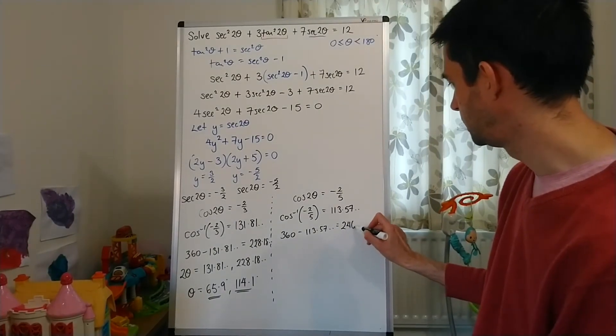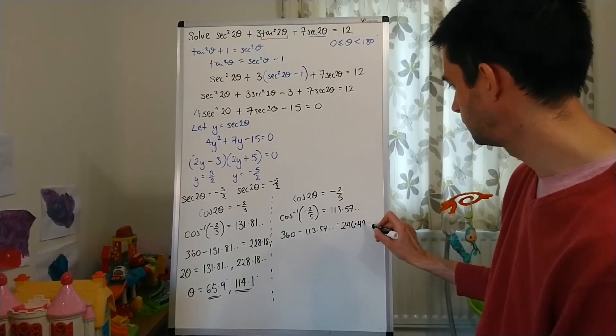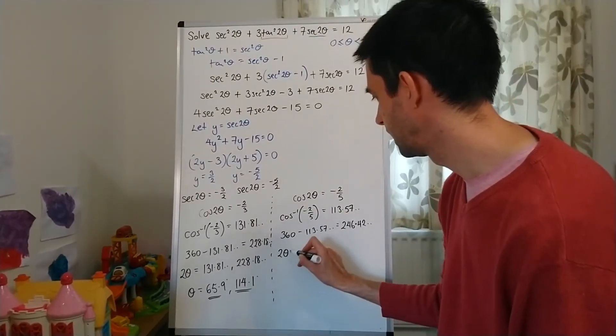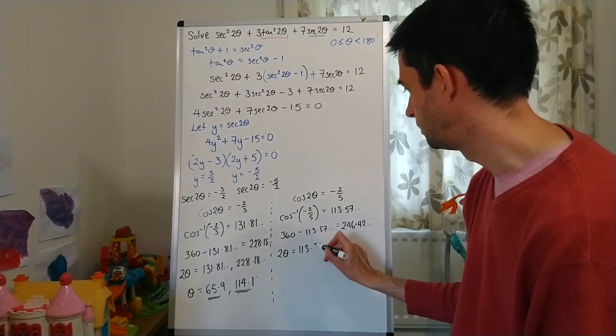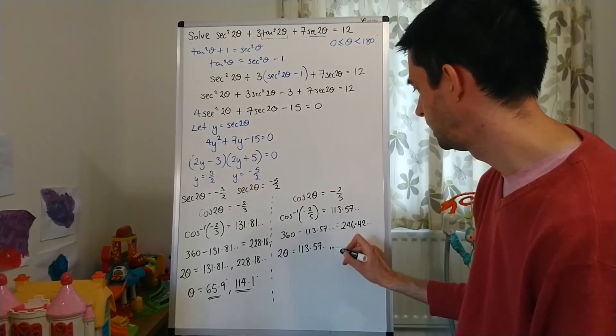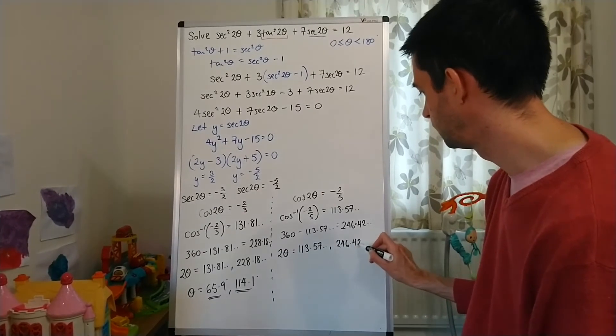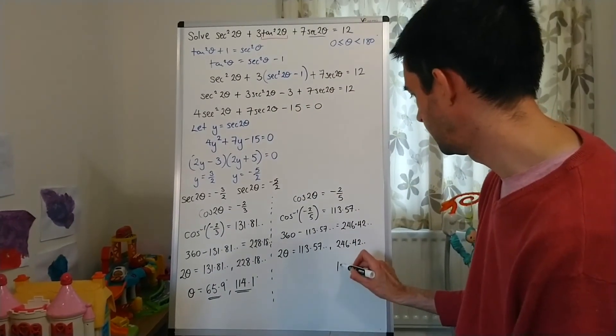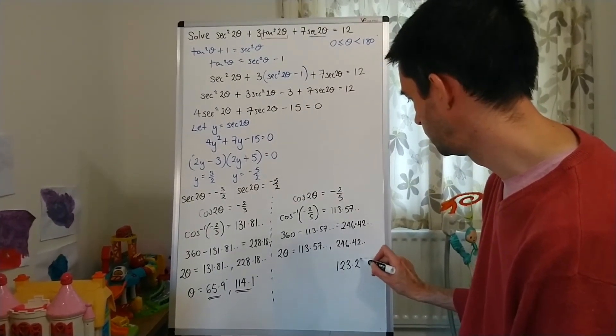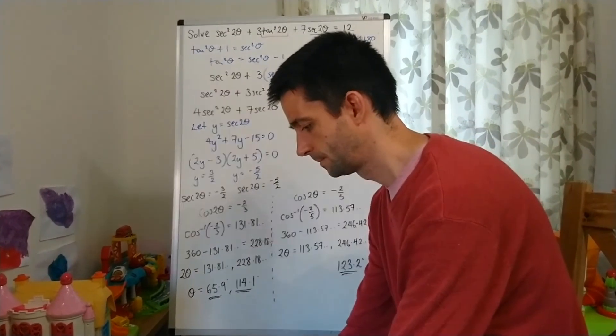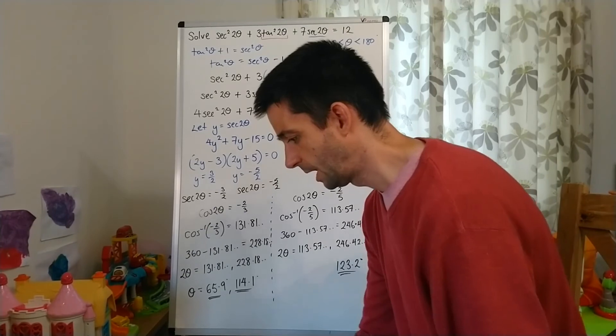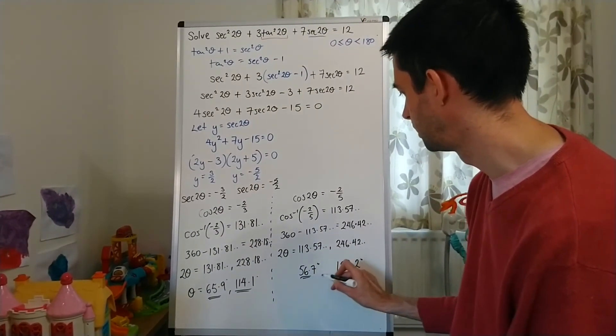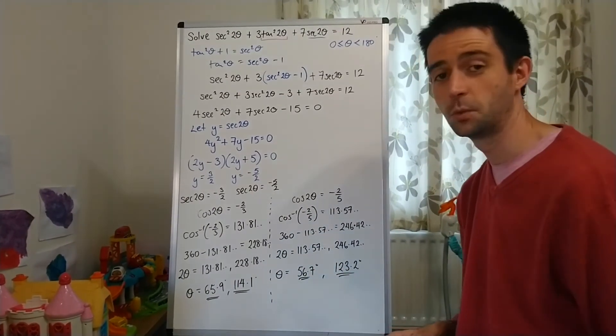But remember, as over here, that isn't θ, that's 2θ. So, 2θ is 113.57 and 246.42. So, dividing each of those by 2, I get 56.7 degrees from this one and 123.2 degrees from this one. Those are my answers for θ to one decimal place.